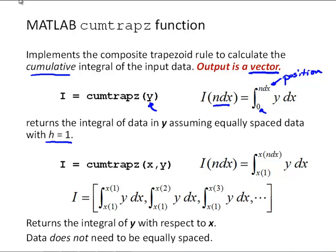A more intuitive way to think about QMTRAPZ is to consider the case where we give it two inputs, x and y. Each element of i is going to be equal to the integral from the first element of x up to the corresponding element of x at that index. The first element would be the integral from x1 to x1 of y dx, which is 0. The next one from x1 to x2, then x1 to x3, and so on up to x1 to xn. Again, for QMTRAPZ the data does not need to be equally spaced.